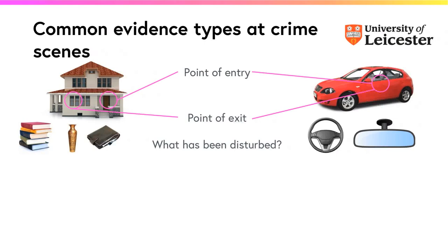In the vehicle, the rear view mirror might have been adjusted to allow a driver of a different height to be able to see out the back of the car, and the steering wheel might have been adjusted as well — all things that have then been touched by the offender. Remember Locard's principle: every contact leaves a trace where there has been contact between the offender and those surfaces.